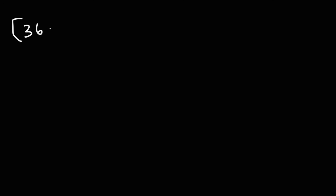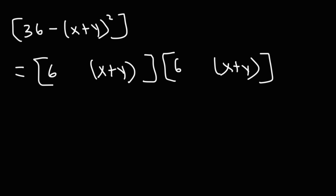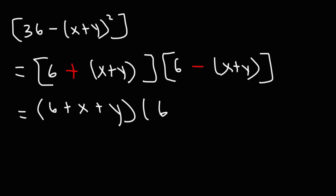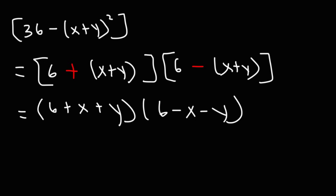Now try this problem: 36 minus x plus y squared. The square root of 36 is 6, and the square root of x plus y squared is simply x plus y. We have a plus and a minus. Simplifying: 6 plus x plus y, and 6 minus x minus y — don't forget to distribute the negative sign to y. You could leave your answer as 6 plus x plus y times 6 minus x minus y, or in the unsimplified factored form. Both answers are correct.